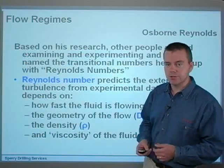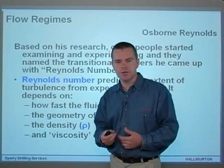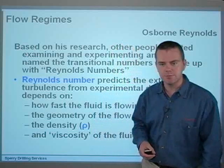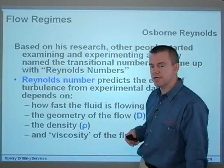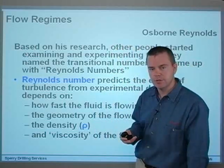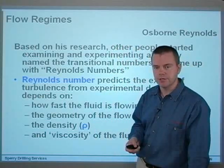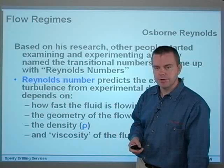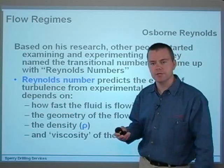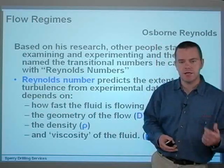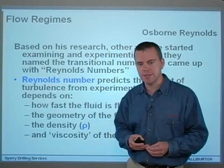Based on his research, other people started examining and experimenting, and they named the transitional numbers that he came up with 'Reynolds numbers' in memory of the man. So the Reynolds number is actually the number that predicts the extent of turbulence from experimental data.